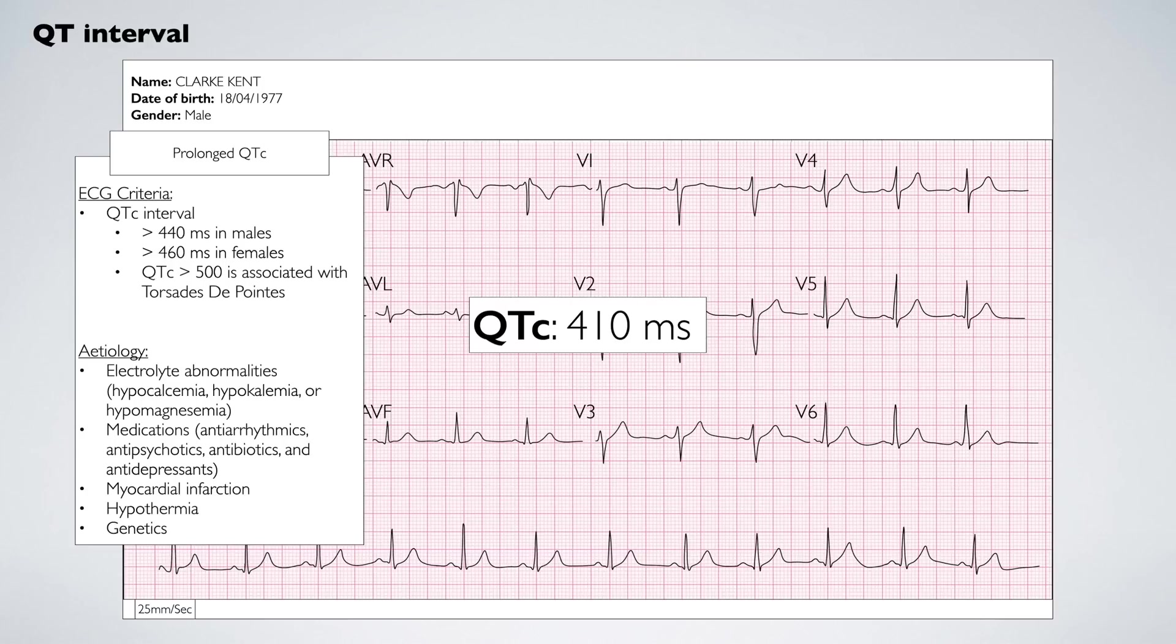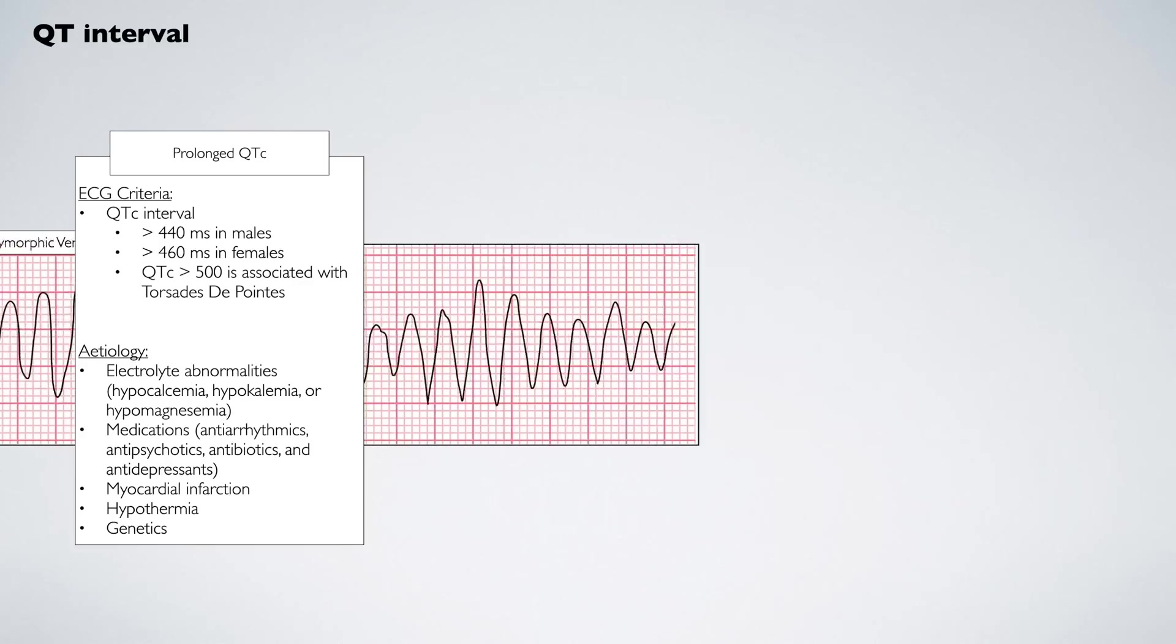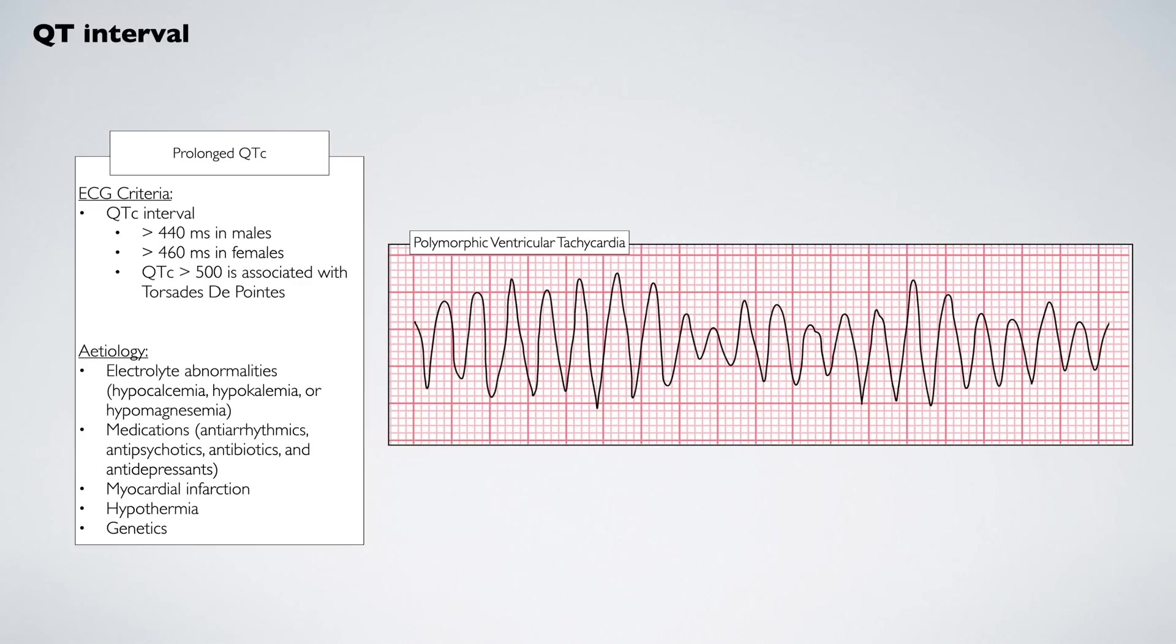The QTc is prolonged if it is greater than 440 ms in males and 460 ms in females. The QTc is important because prolongation, particularly above 500 ms, can produce a deadly polymorphic ventricular tachycardia known as torsades de pointes. Various drugs can prolong the QTc, so keep an eye out for these in the history.